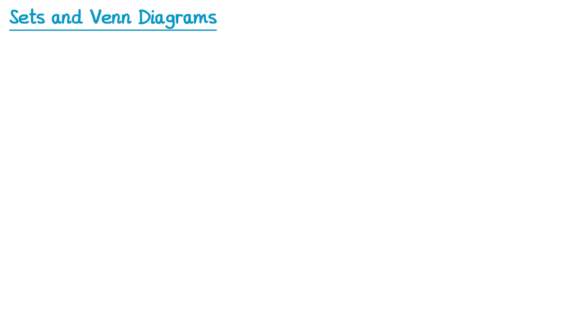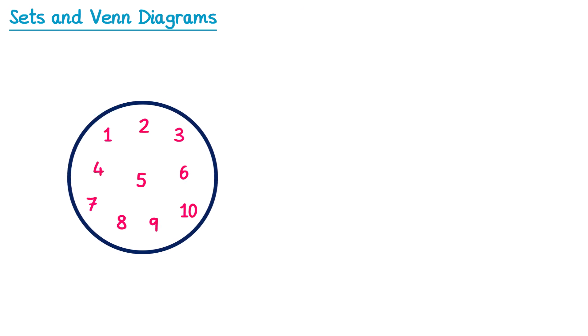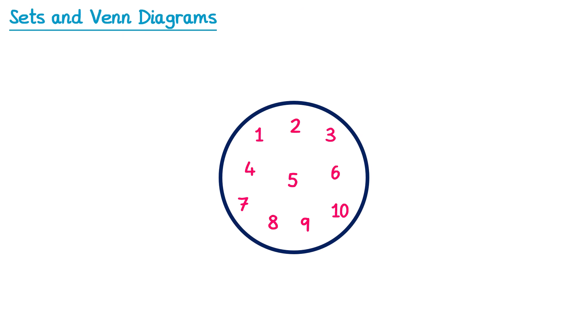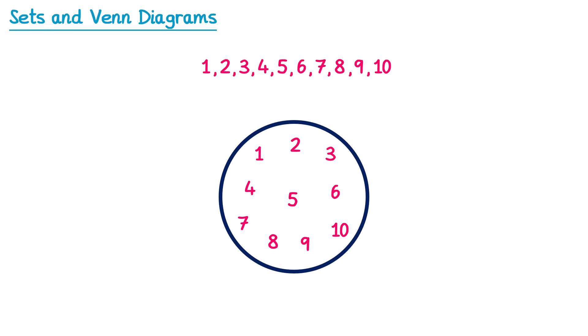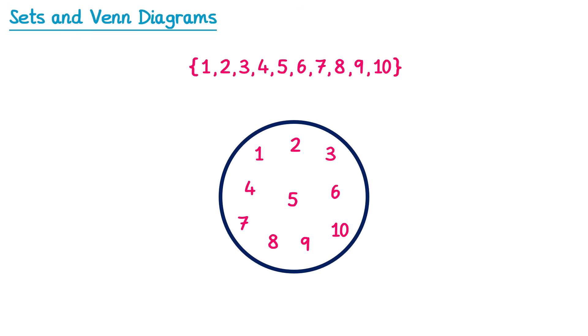In maths, a set is a collection of things which are usually numbers. For example, this is the set of positive integers that are less than or equal to 10. Each of the numbers within the set is known as a member or an element of the set. We often write sets out as a list of numbers inside curly brackets. It's common to give the set a name which is a capital letter — for example, this could be set A.